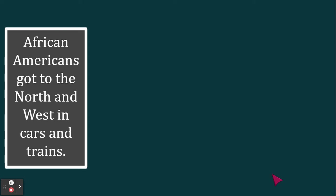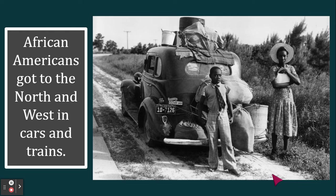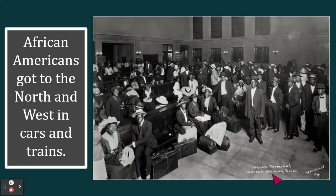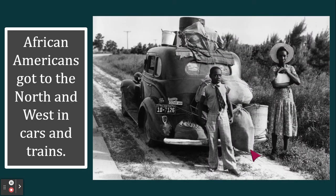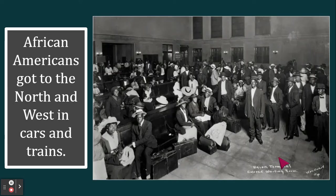African Americans got to the north and west in cars — if you were lucky enough to own or rent a car, you would put all your belongings in it and drive to your destination city. But for most people the way they got to the north was by train. This is Union Terminal, a train station, and all of these people are waiting for a train so they can move north. They packed all of their belongings — clothes, memorabilia like pictures and photographs, pots and pans, everything they'd need to survive — to bring in their car or carry onto the train.